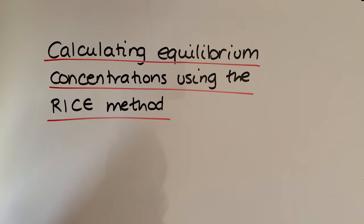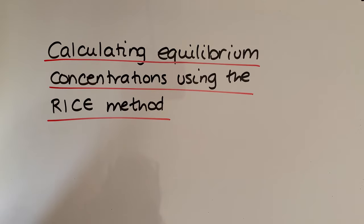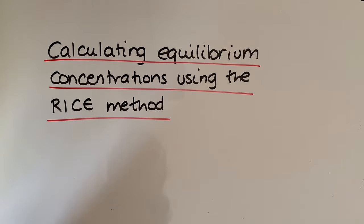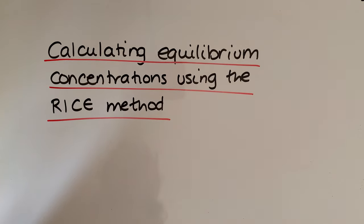We've already had a look at how we can calculate Kc by writing out the Kc expression for any reversible reaction, then plugging in the equilibrium concentrations to get Kc and the units. Now the issue is, what if we're not given the equilibrium concentrations? What we now need to do is use something called the RICE method to calculate the equilibrium concentrations and then plug that into our Kc expression to get Kc.